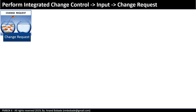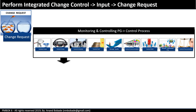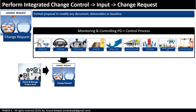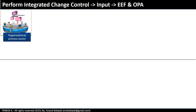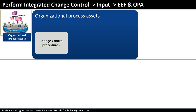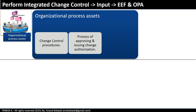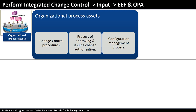Change request: as shown in the diagram, most of the controlling processes produce change requests as output. A change request is also an output of Direct and Manage Project Work, which is the process where you create the deliverables. A change request is a formal proposal to modify any document, deliverable, or baseline. It may also include corrective actions, preventive actions, defect repair, and updates to project documents. Change request is input to Perform Integrated Change Control where it will go through a proper approval cycle. Organizational process assets may include change control procedures, processes for approving and issuing change authorization, and configuration management processes.